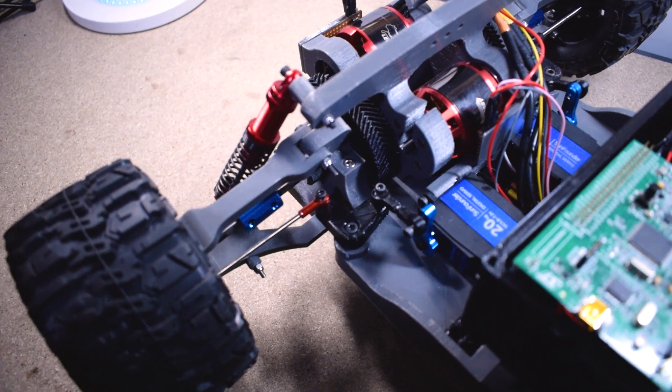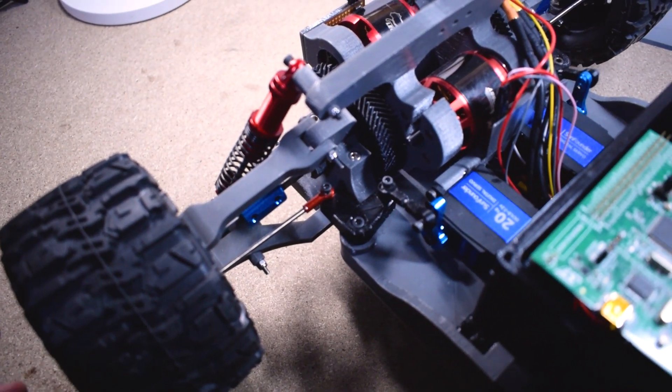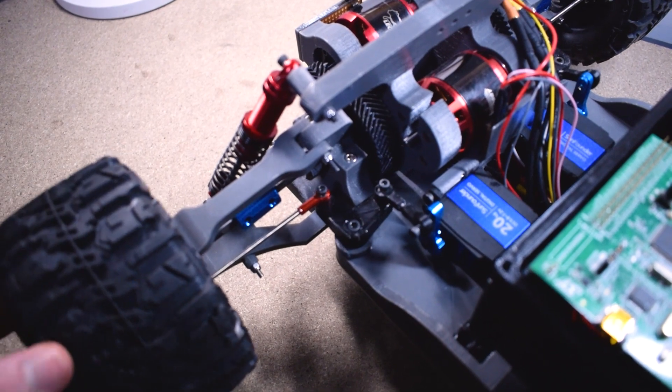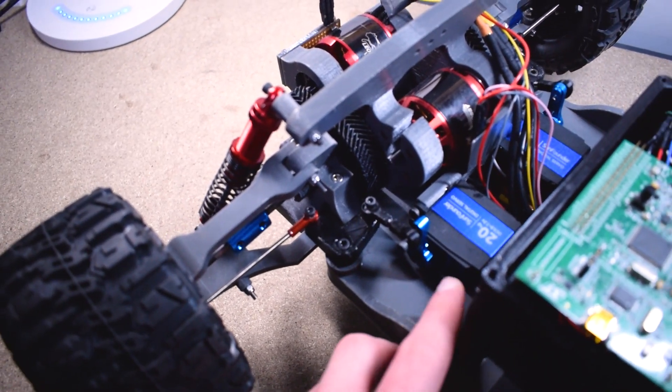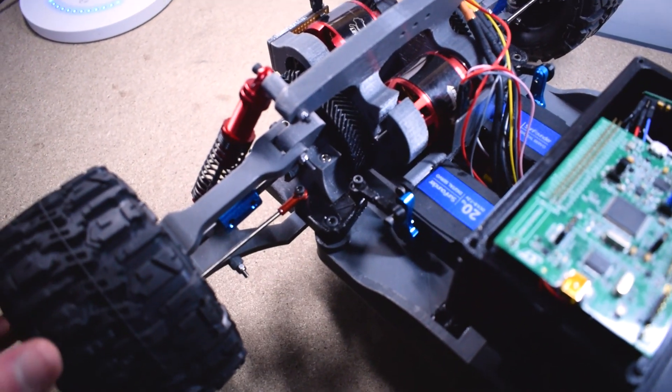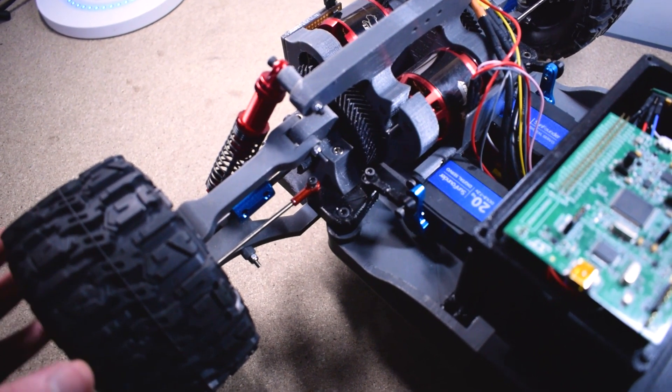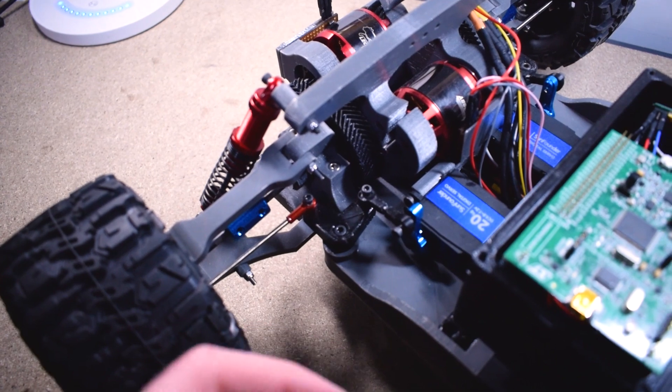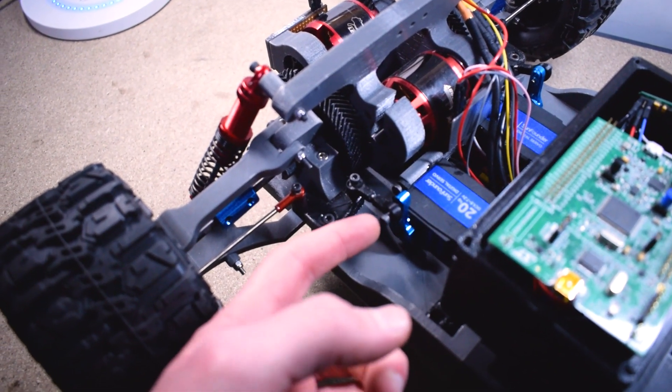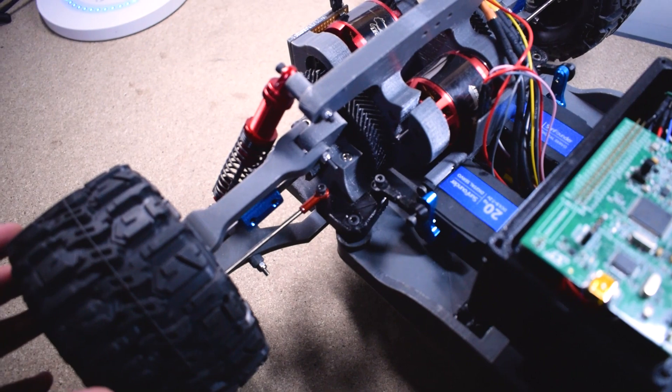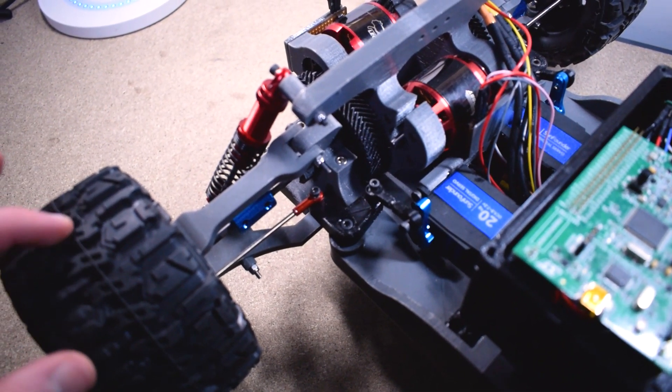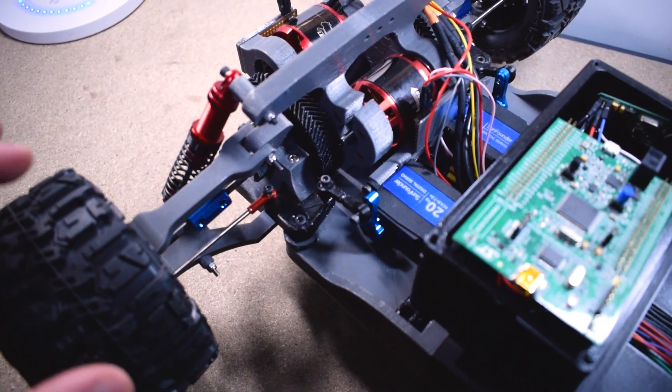There's even a little bit of play in the servo horn that you can see there. So as I wobble the wheel you can see there's a tiny bit of wobble on its own. That's okay but when you add in all these other tolerances such as the rod ends that all adds up and you end up with a few degrees of play on the wheel.